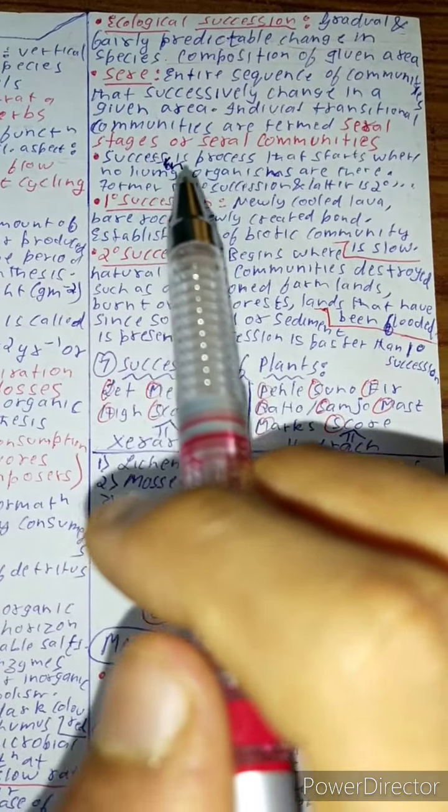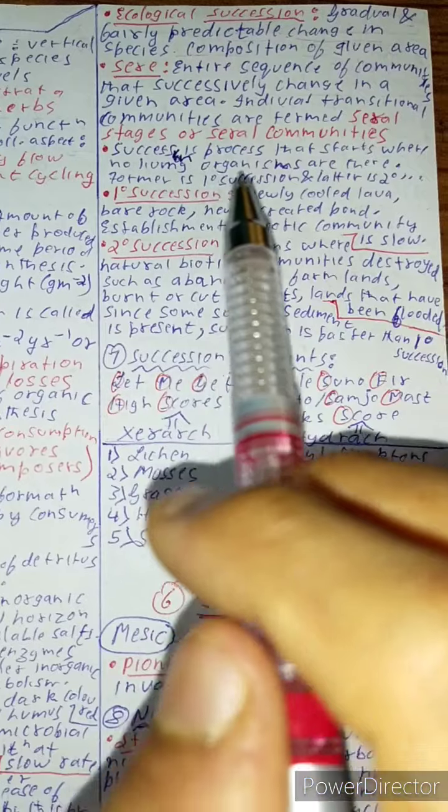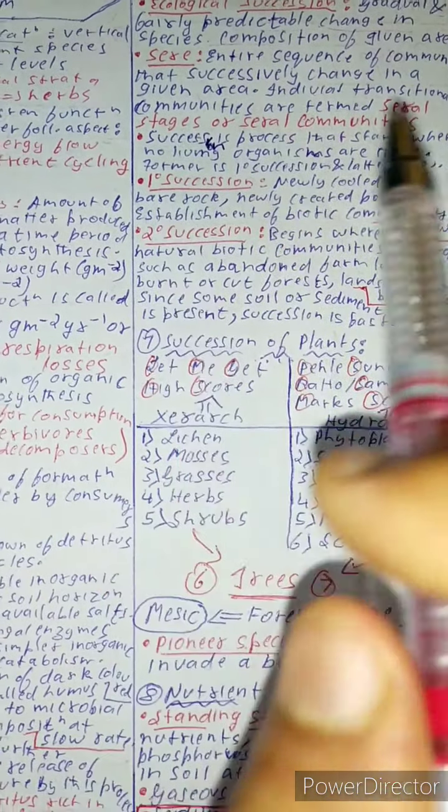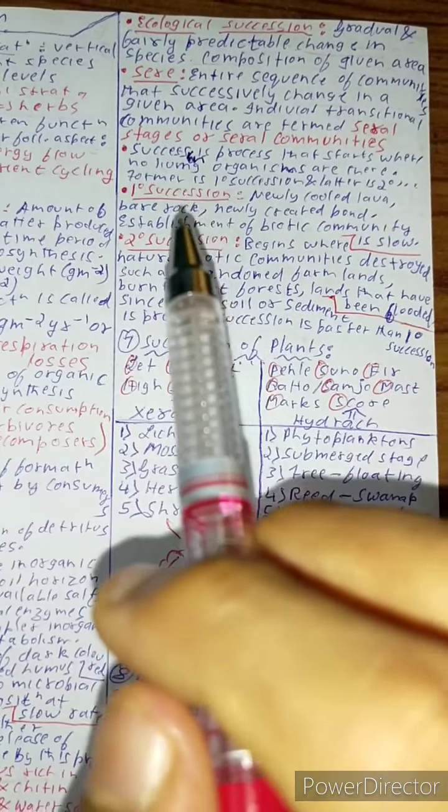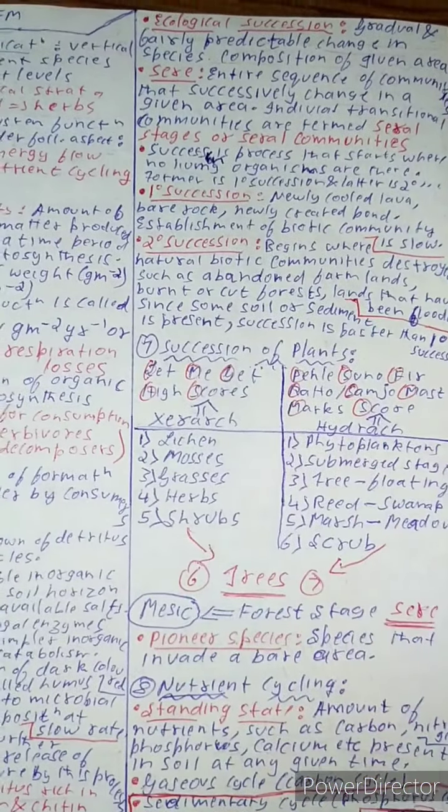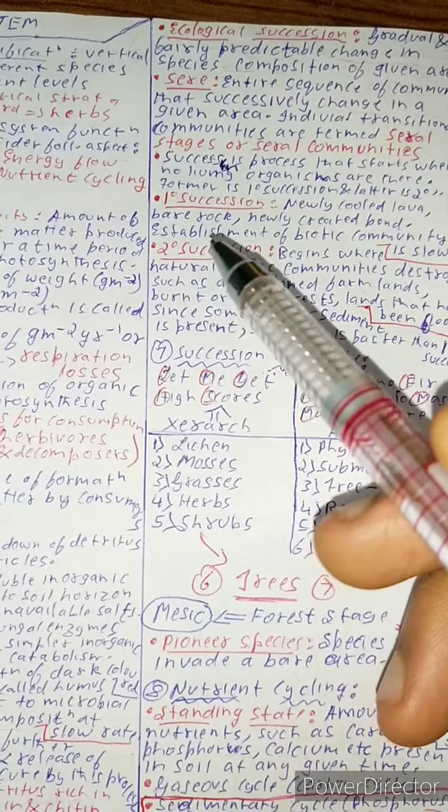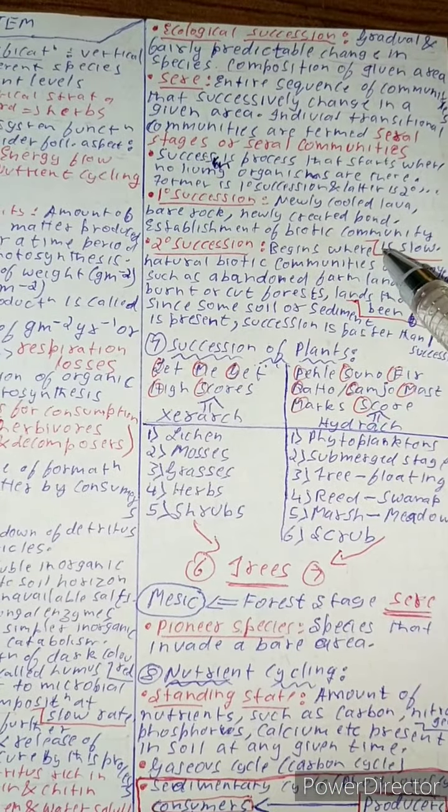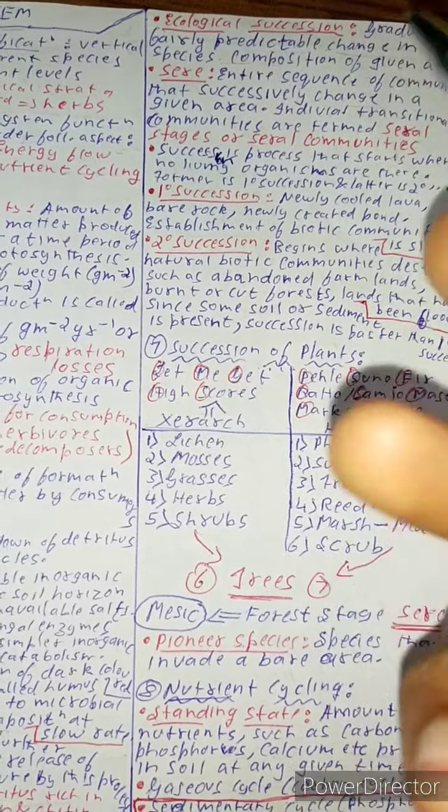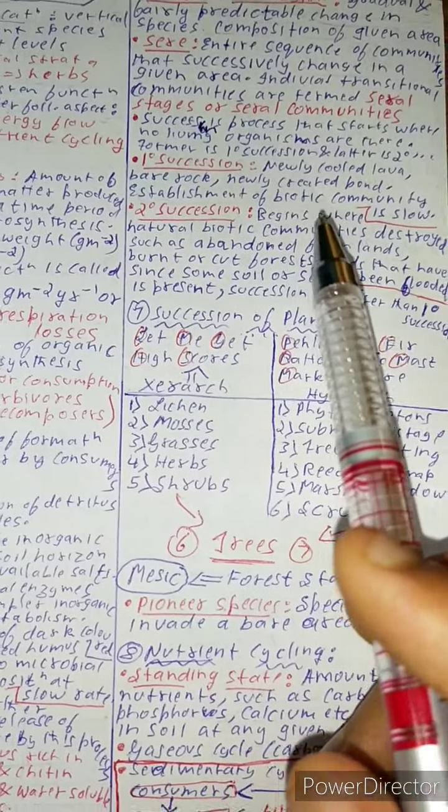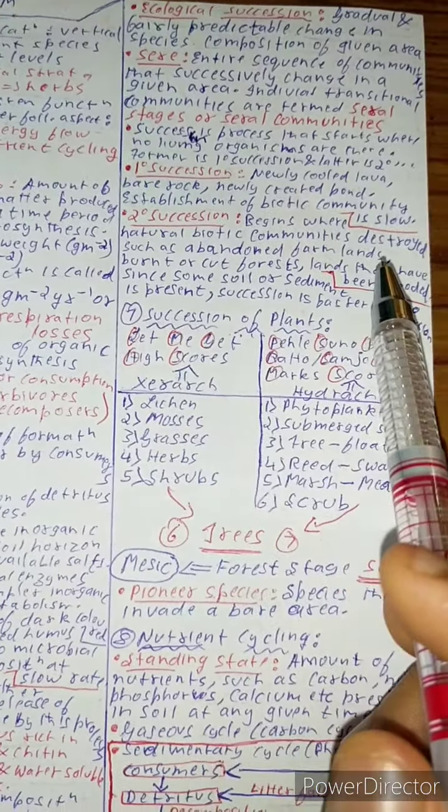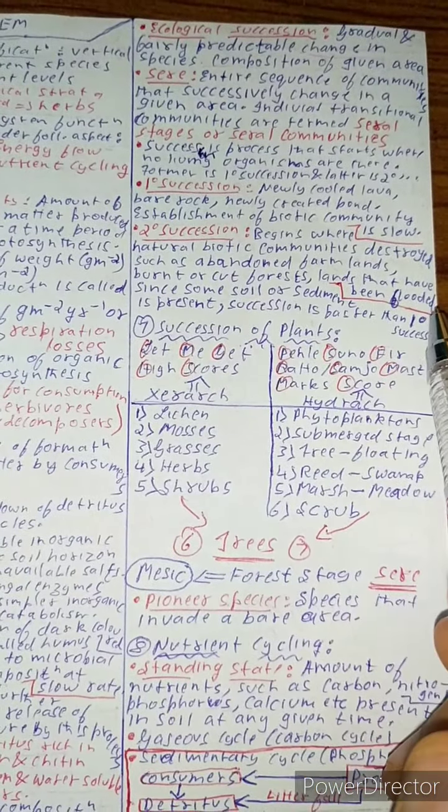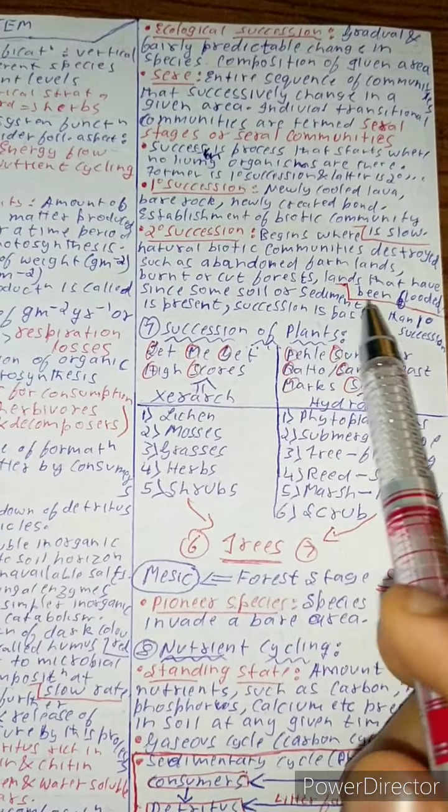Succession is a process that starts when no living organisms are there - the former is primary succession, and later is secondary. Let us see what is primary and secondary succession. Primary succession occurs on bare rock, newly cooled lava, newly created pond - establishment of biotic community over here is slow, obviously. Secondary succession begins where natural biotic community gets destroyed, such as abandoned farmland, burnt or cut forest land that have been flooded. Since some soil or sediment is present, succession is faster over there than primary succession.